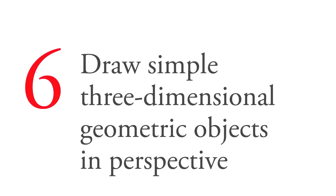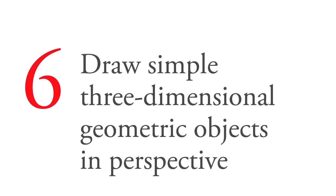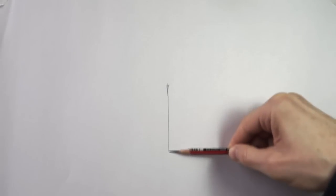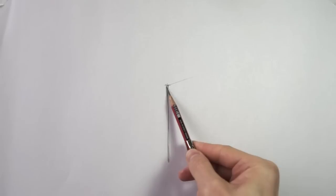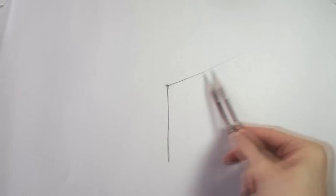Number six, draw simple, three-dimensional geometric objects in perspective. When you are ready to advance to a higher level, start thinking three-dimensionally. In this exercise, you will draw wire-framed transparent objects in perspective.